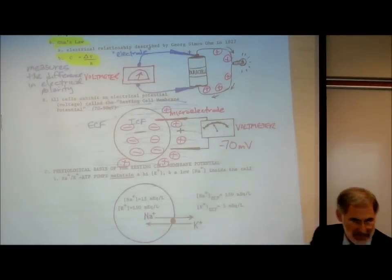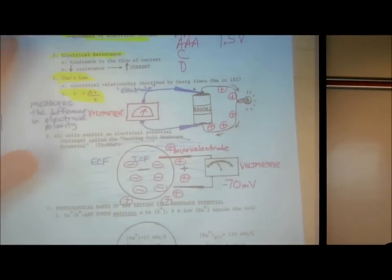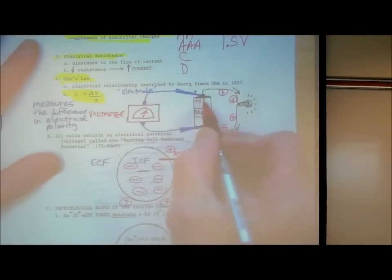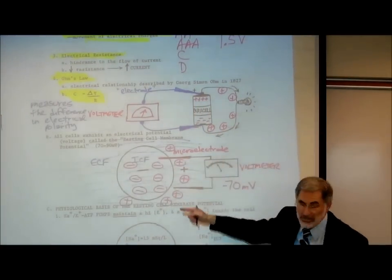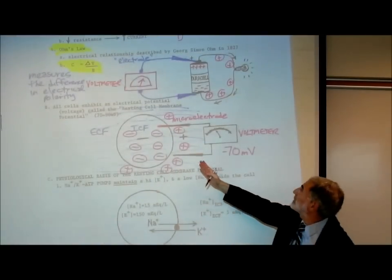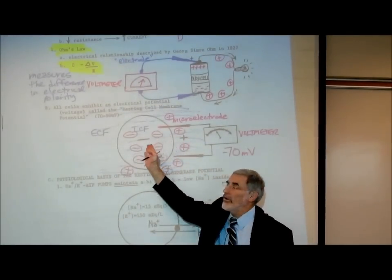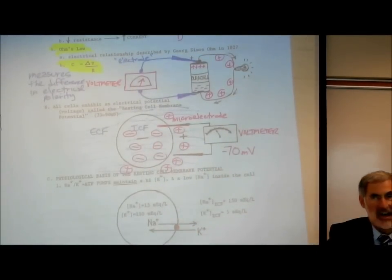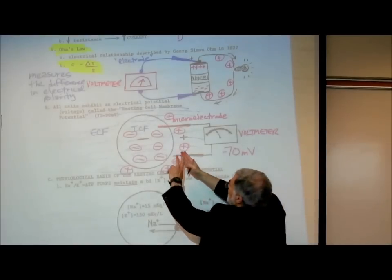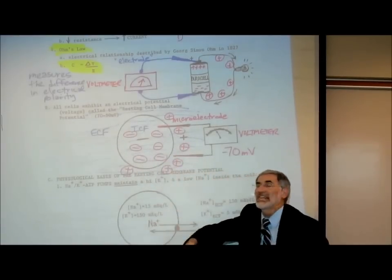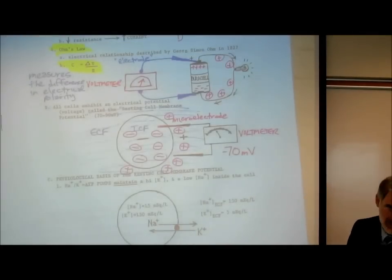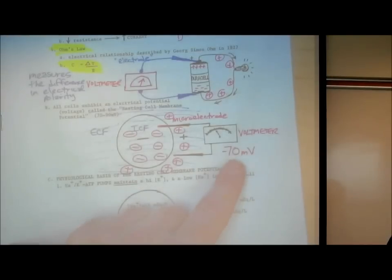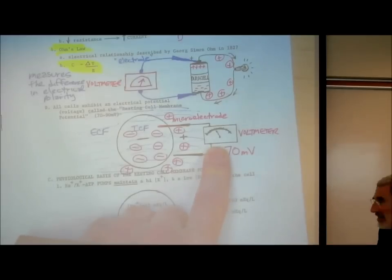Just like the battery, which had more positive charges at one end and more negative charges at the other — the cell has more positive charges on the outside and more negative charges on the inside. When there's a difference in electrical polarity, that's called a voltage, an electrical potential difference. The size of this voltage is about 70, 80, or 90 millivolts, depending on which cell you measure it in.